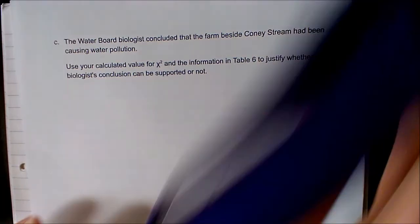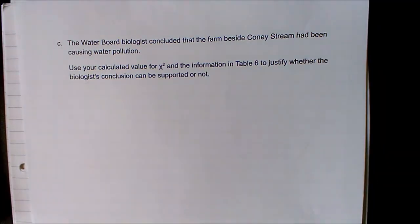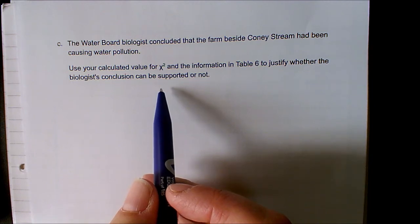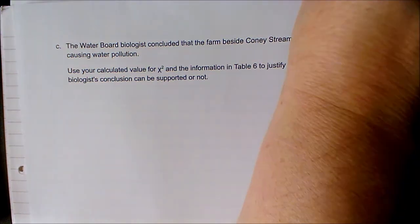The next part of the question says the water board concluded that the farm beside Coney Stream had been causing water pollution. They're asking you to use your calculated chi-squared and the information in the table to justify whether the biologist's conclusion can be supported or not.